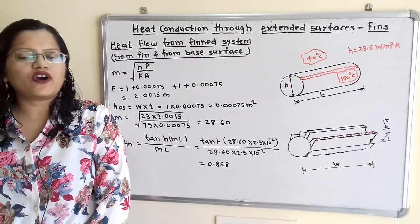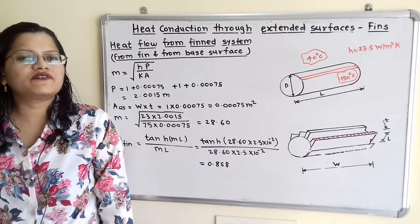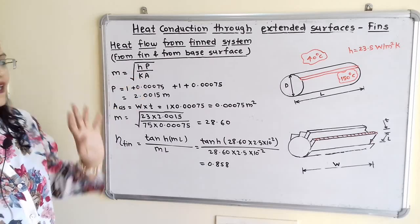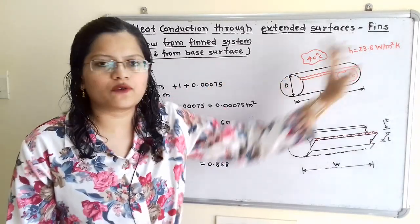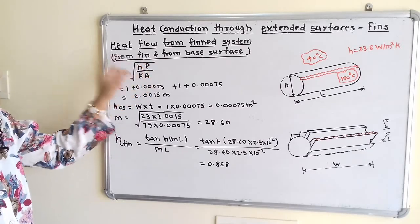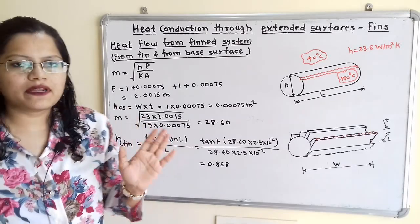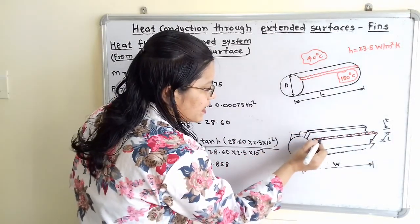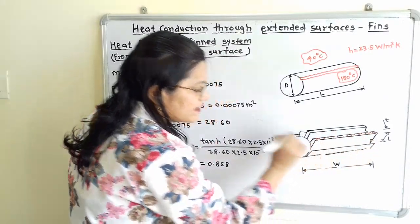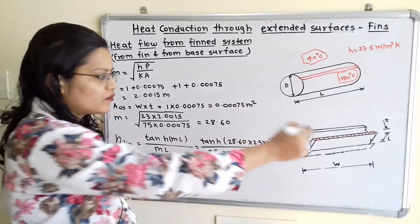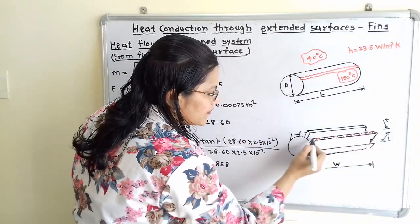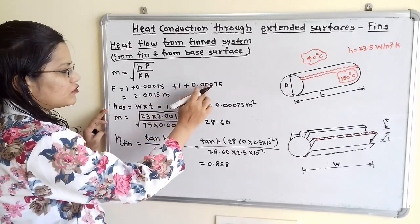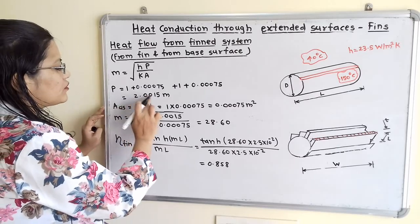To find the effective area for heat transfer, we first calculate the efficiency of the fin, and for that we first find the value of M. M = √(H × P / K × A). Here H is the convective heat transfer coefficient. P is the perimeter of the cross-sectional area of the fin: P = 2 × (W + t) = 2 × (1 + 0.00075) = 2.0015 m. K is the thermal conductivity of the fin material, and A is the cross-sectional area = W × t = 0.75 × 10⁻³ m².